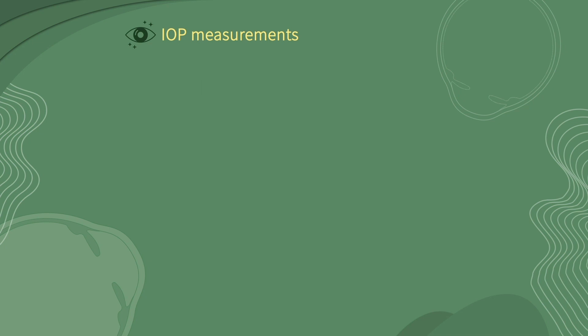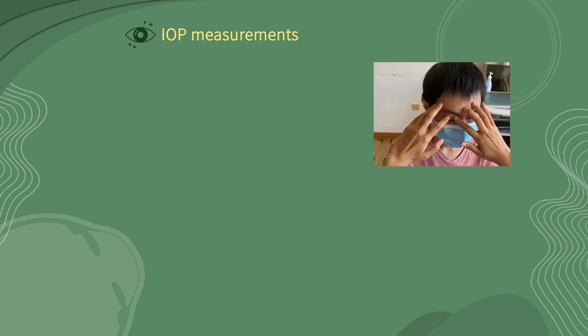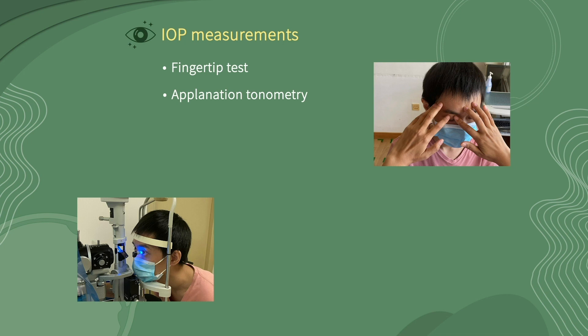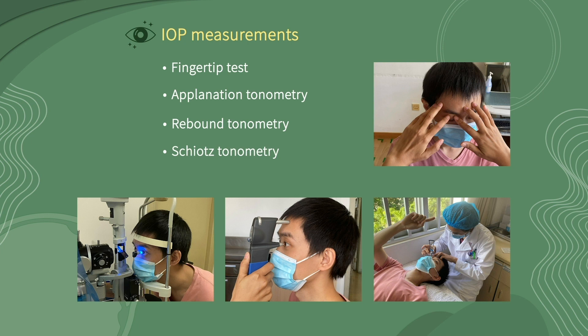Intraocular pressure is an important parameter for diagnosis and monitoring many eye disorders such as glaucoma. The normal range is 10 to 21 mmHg. There are several methods for IOP measurement. The simplest way is to put both index fingers over the patient's closed eyelid to estimate whether the intraocular pressure is normal, high, or low, but the fingertip test cannot get a quantitative result. Applanation tonometry, such as Goldman's tonometry, is considered the gold standard of IOP measurement. There is also rebound tonometry and Schiotz tonometry, but all require contact of the instrument with the eye.